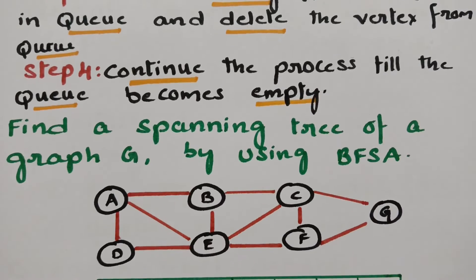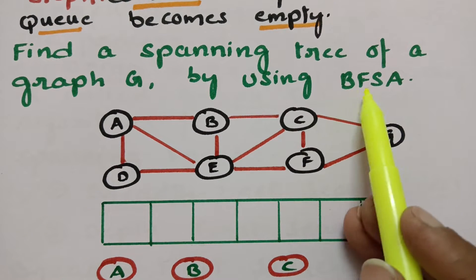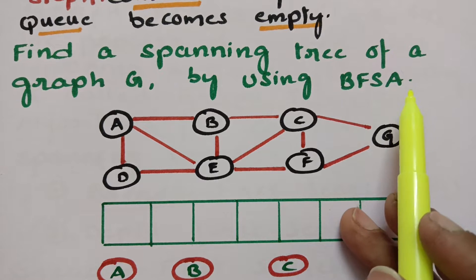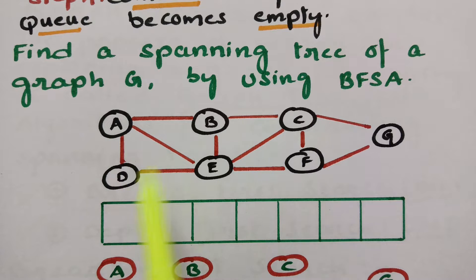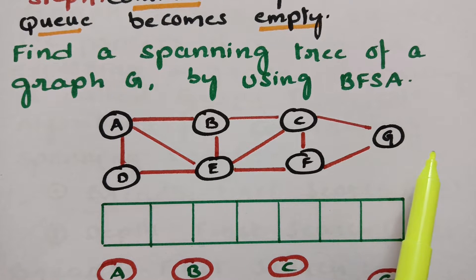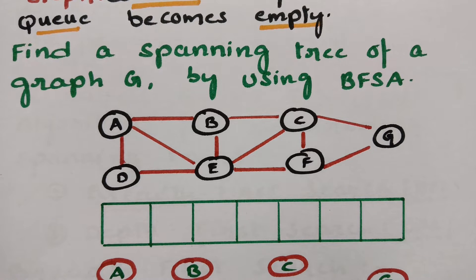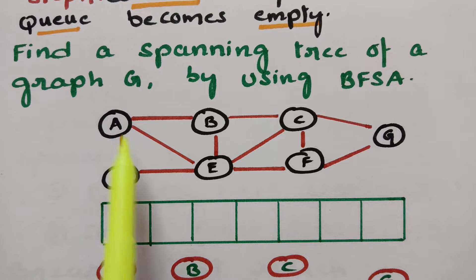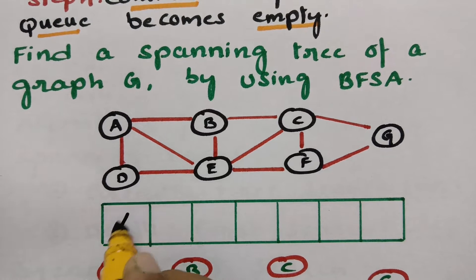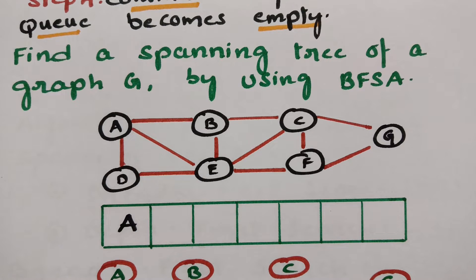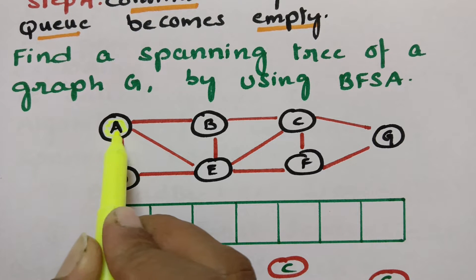Here is an example: find the spanning tree of a graph by using the breadth first search algorithm. The vertices are A, B, C, D, E, F, and G. We have to use the graph traversal method. First we have to select one vertex as a root vertex — I am selecting A as a root vertex. After selecting A as a root vertex, we have to visit, explore, and then delete.